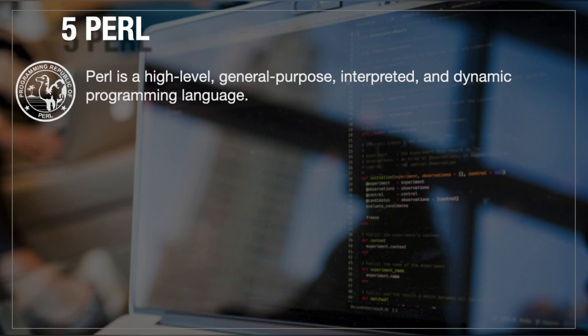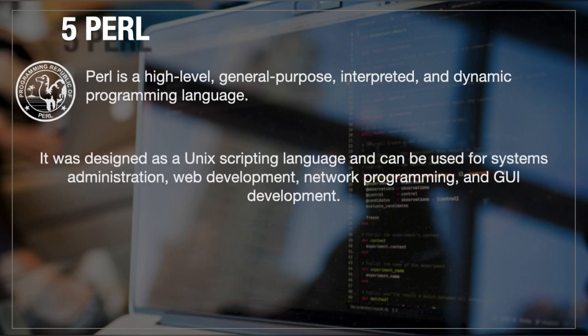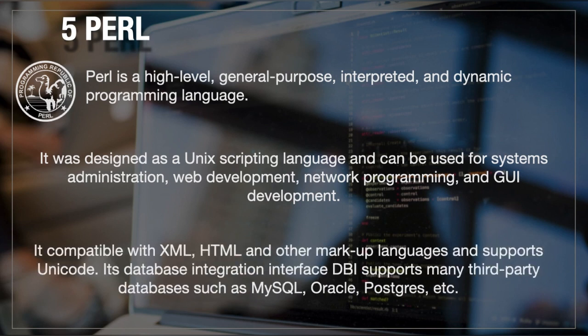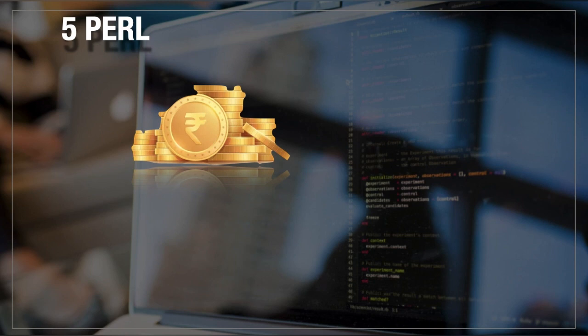In 5th position is Perl, a high-level, general-purpose, interpreted, dynamic programming language. It was basically designed as a Unix scripting language. It can be used for system administration, web development, network programming, and GUI development. It is compatible with XML, HTML, and other markup languages and supports Unicode. Its database integration interface DBI supports third-party databases such as MySQL, Oracle, and PostgreSQL. If you have knowledge of Perl, you get a minimum of 8 to 9 lakh.